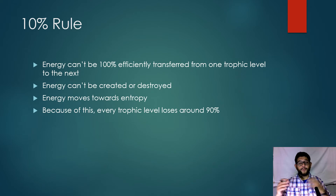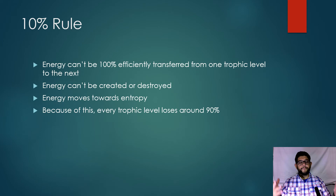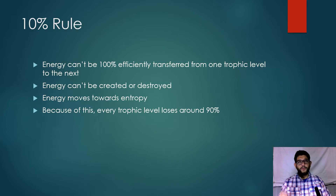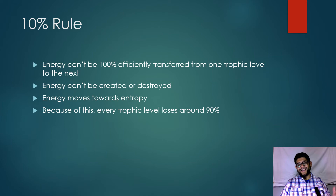If you look at a thermal image of a rainforest, it produces quite a large amount of heat because of all the energy flowing through that system. It has a ton of sunlight, a lot of producers, and those producers are transferring energy — but that doesn't mean it's using 100%. Nothing uses 100%. Because of this, every trophic level generally ends up losing 90% of its energy as heat.